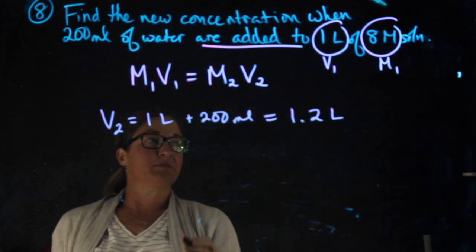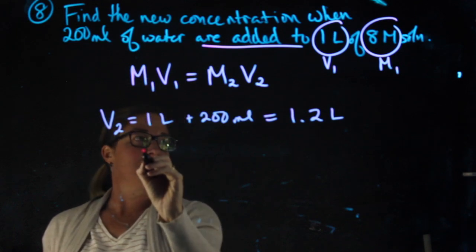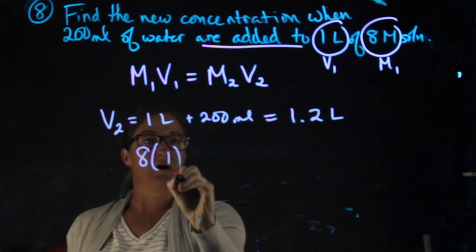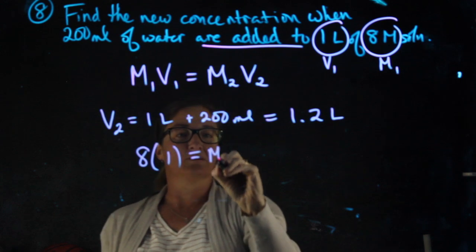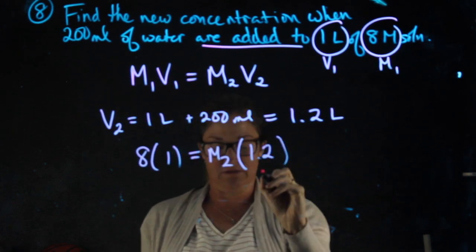Now I'm ready to plug in. M1 is 8, V1 is 1. M2 is what I'm looking for, V2 is 1.2 liters.